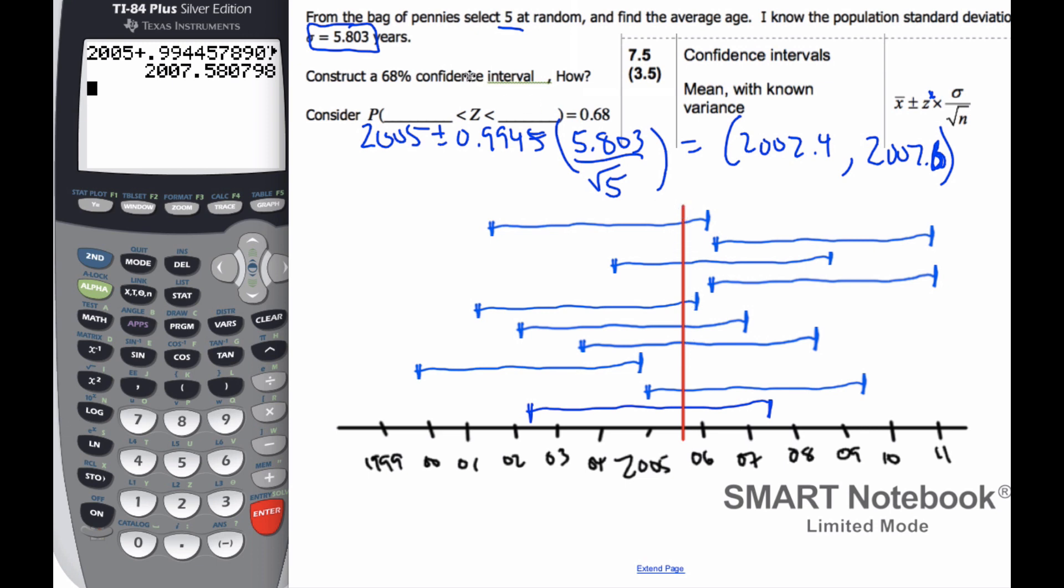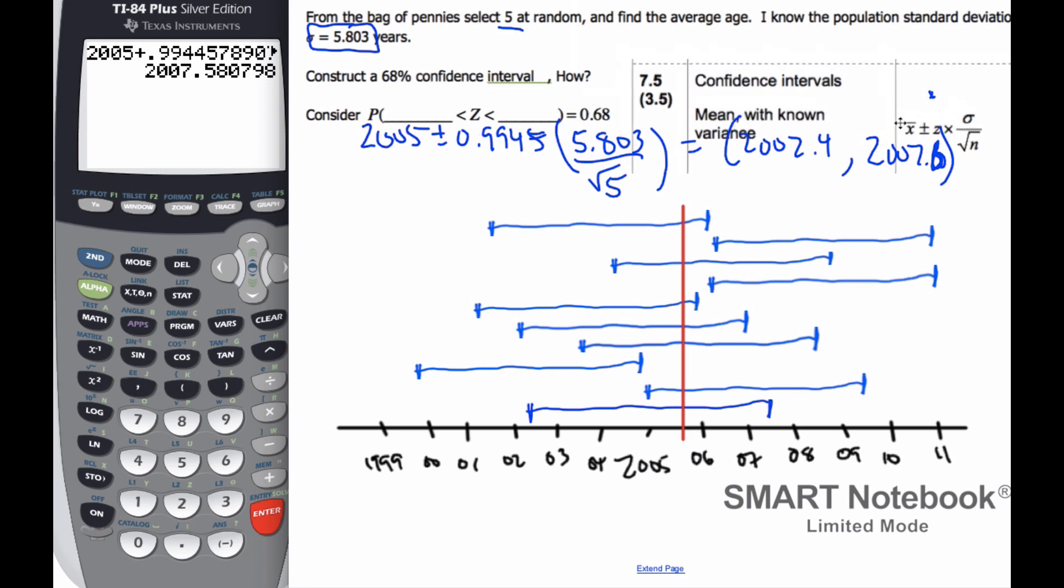And so this is the true value of the population. Now this is rarely ever known. But what the confidence level means is we are 68% confident that this particular method of taking a random sample of 5 and finding the confidence interval, we are 68% confident that this mean that we've calculated, this x-bar here, and then the confidence interval included, it captures the true value of the population mean, the mu, it captures it 68% of the time.